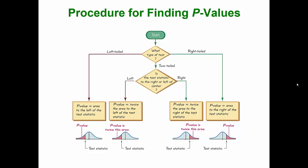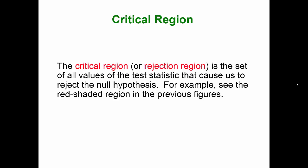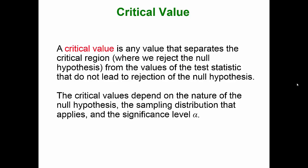Here's a flow chart that shows the procedure for finding p-values, which you can reference in your notes later. The critical region, or rejection region, is the set of all values of the test statistic that cause us to reject the null. A critical value is any value that separates the critical region from the values of the test statistic that do not lead to rejection of the null hypothesis. The critical values depend on the nature of the null hypothesis, the sampling distribution that applies, and the significance level alpha.